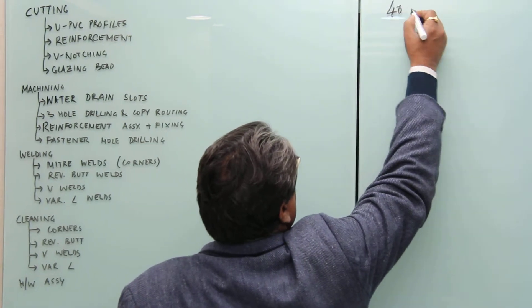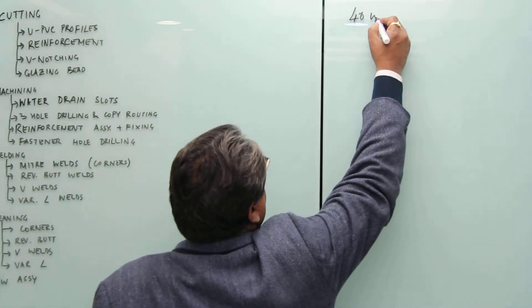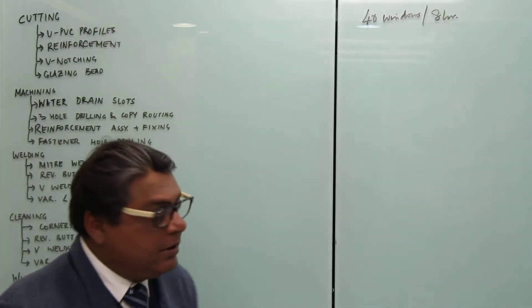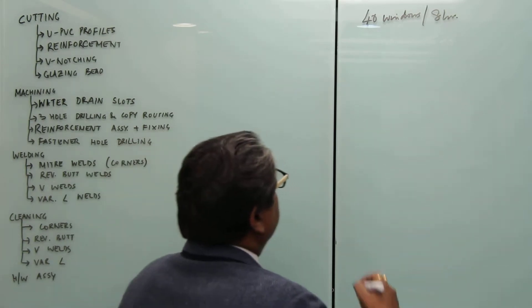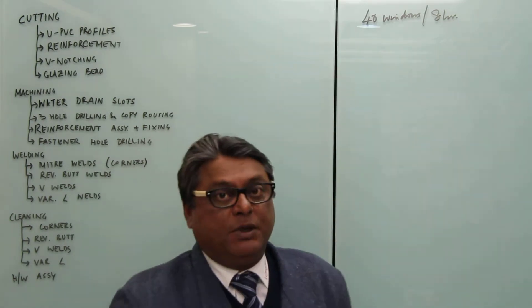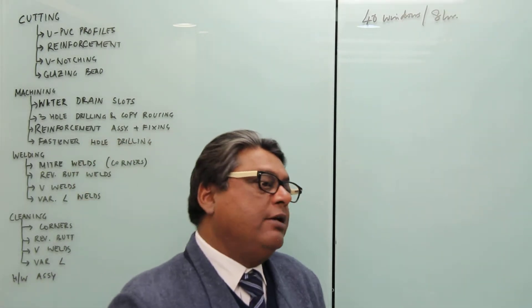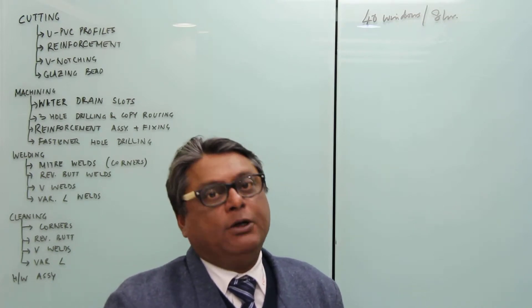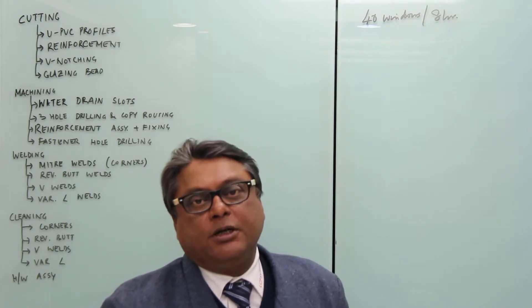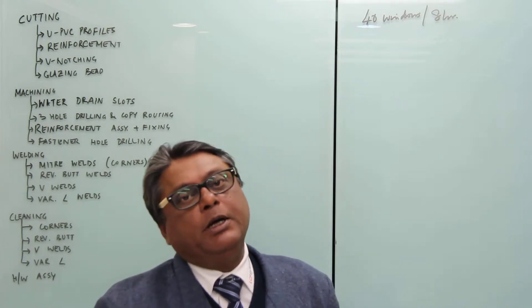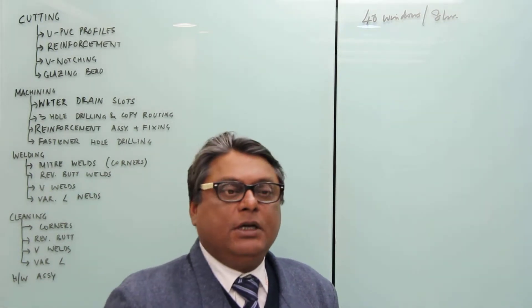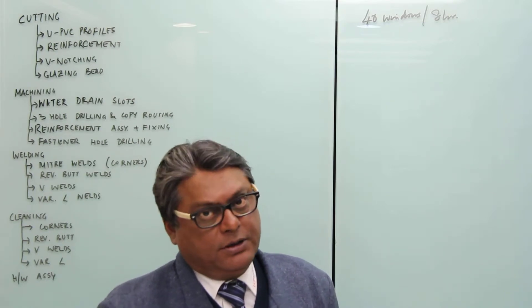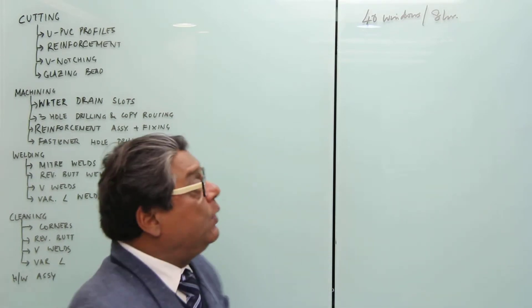If we are working with a 40-per-day plant and the customer wants to do 40 windows per eight-hour shift, we first ask him what product mix he will be doing. Many times the customer would not have a reply — he may not know what product mix or what kind of windows he will ultimately be doing. If that is the case, we assume a single sash casement setup and proceed.